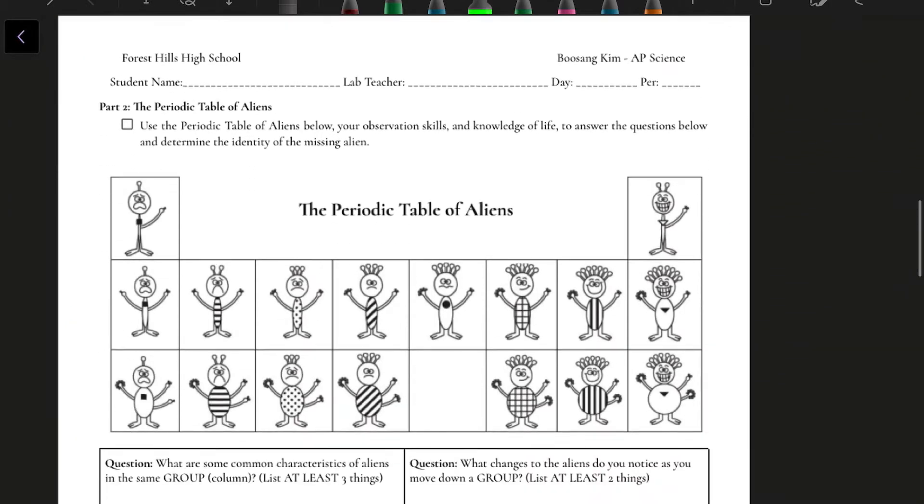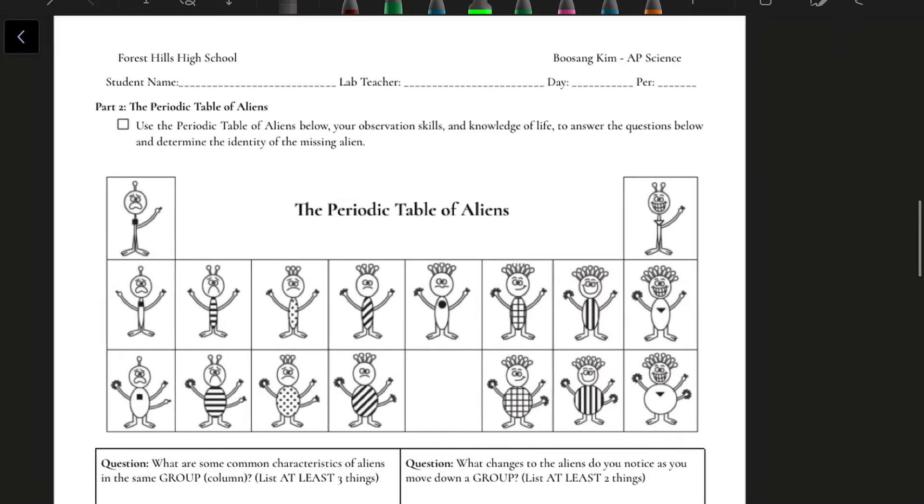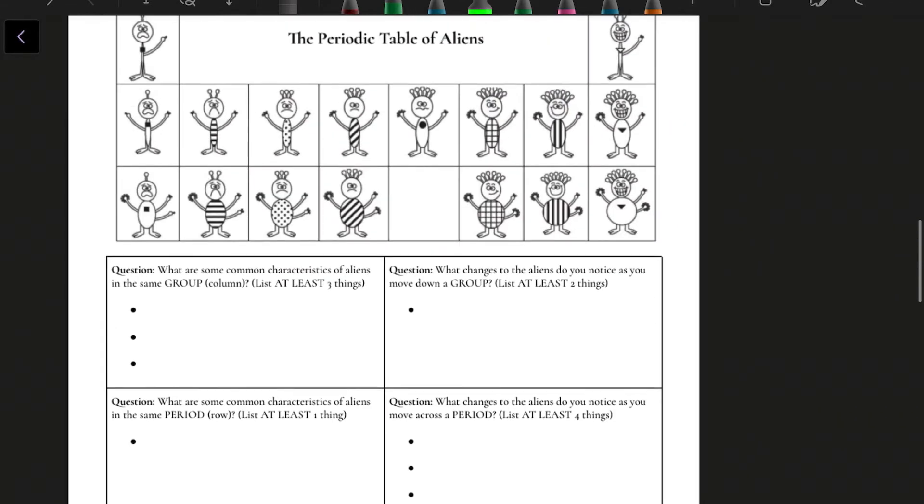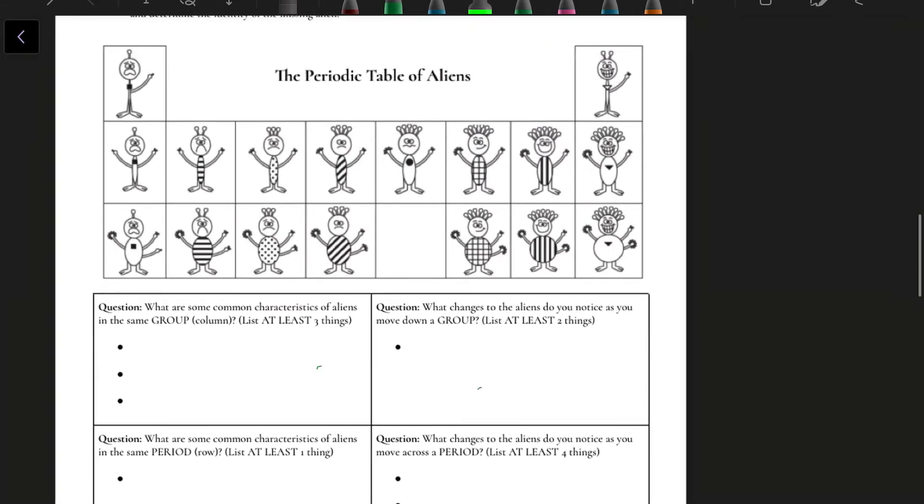Moving forward is part two, the periodic table of aliens. This has similar concepts to the periodic table of colors, but instead of colors, now we're looking at aliens. There are four questions right here that have you look at things that stay the same in a column and things that change as you go down.